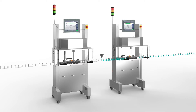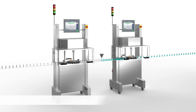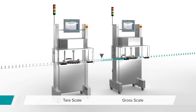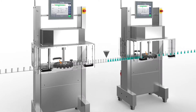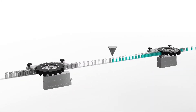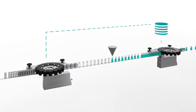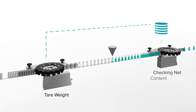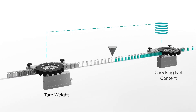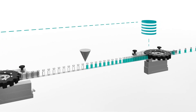Checkwares are standing before and after the filler. We're using a tear scale and a cross scale. In our example, we're using the HCA index scale. The tear scale is sending the information of the tear weight into the shift register of the second checkware, which checks the net content. The production process is ongoing with two individual checkwares.